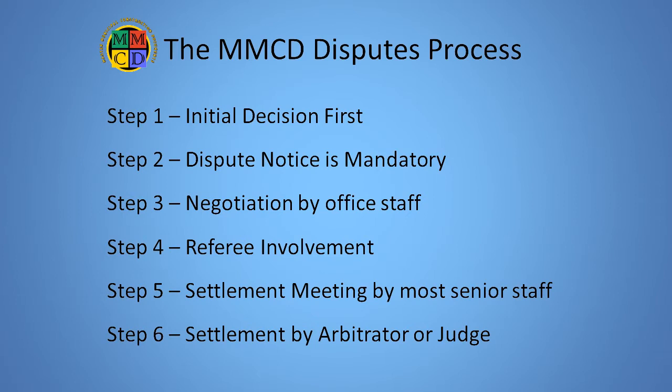Step 5. Failure to accept the referee's opinion leads to the requirement for a settlement meeting involving the most senior staff from both sides and we also recommend involving a mediator to assist. Step 6. If all else fails, the matter will be decided by a judge or an arbitrator.